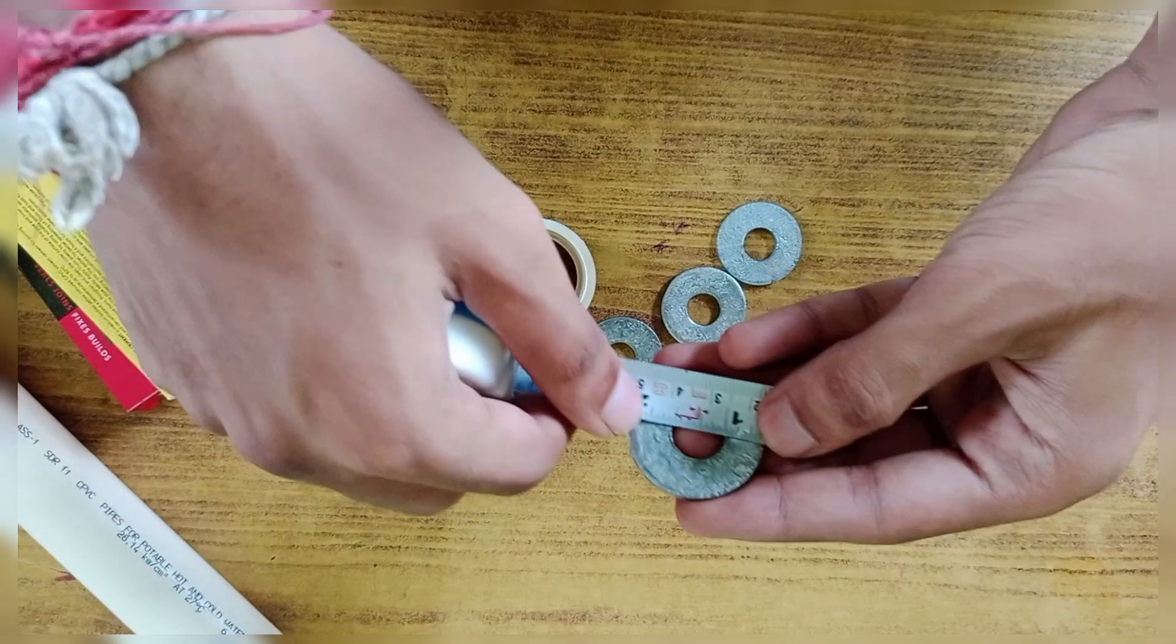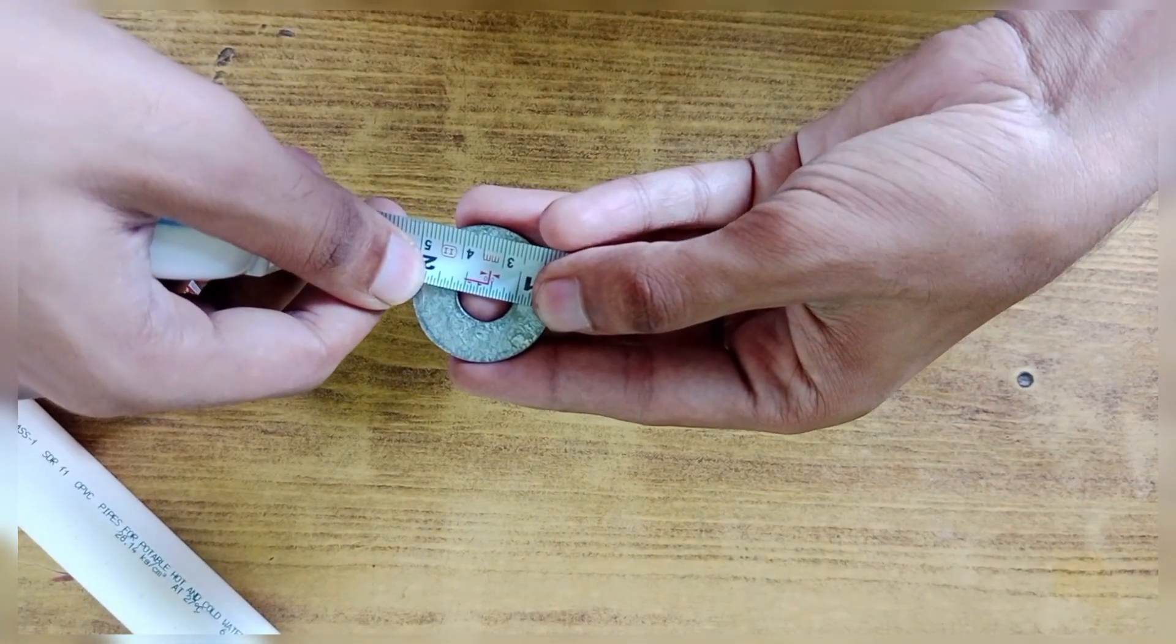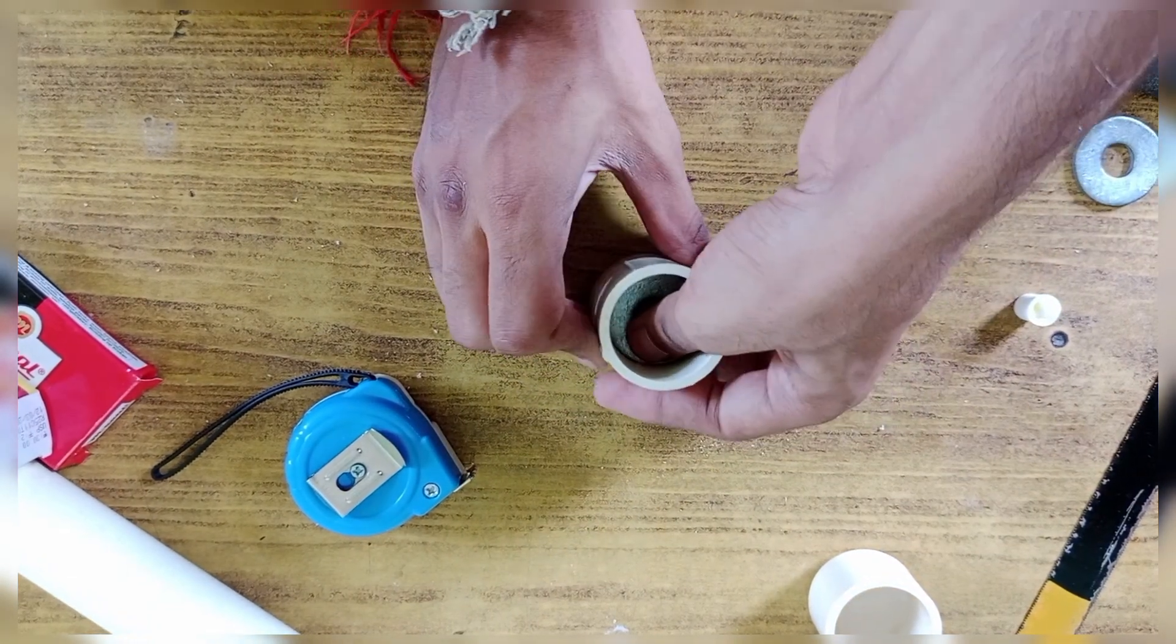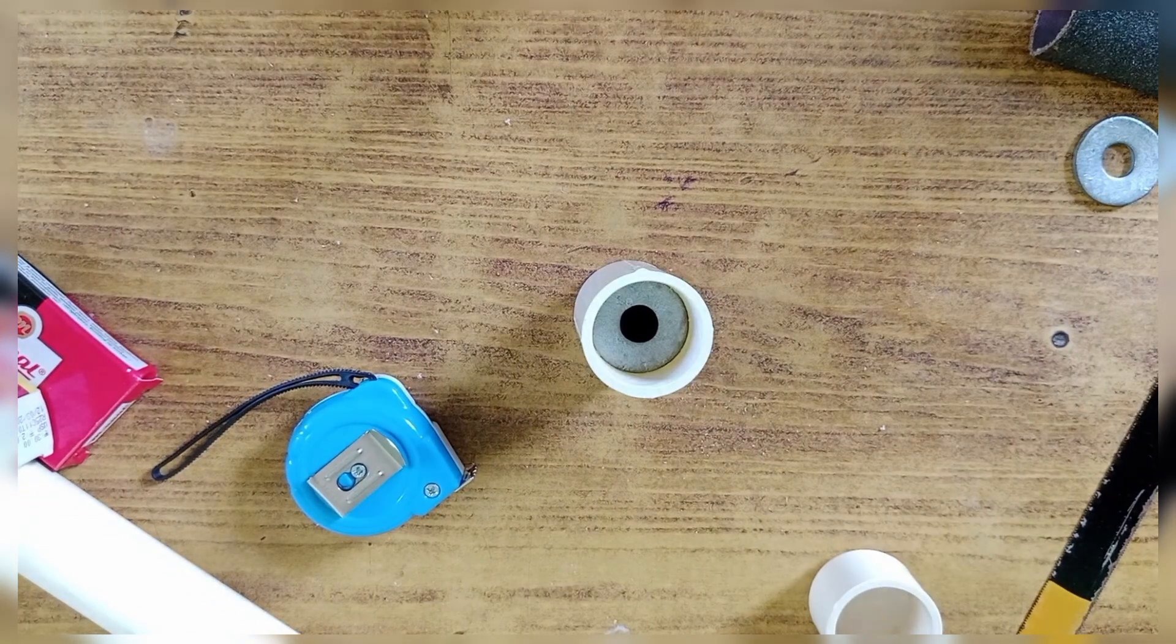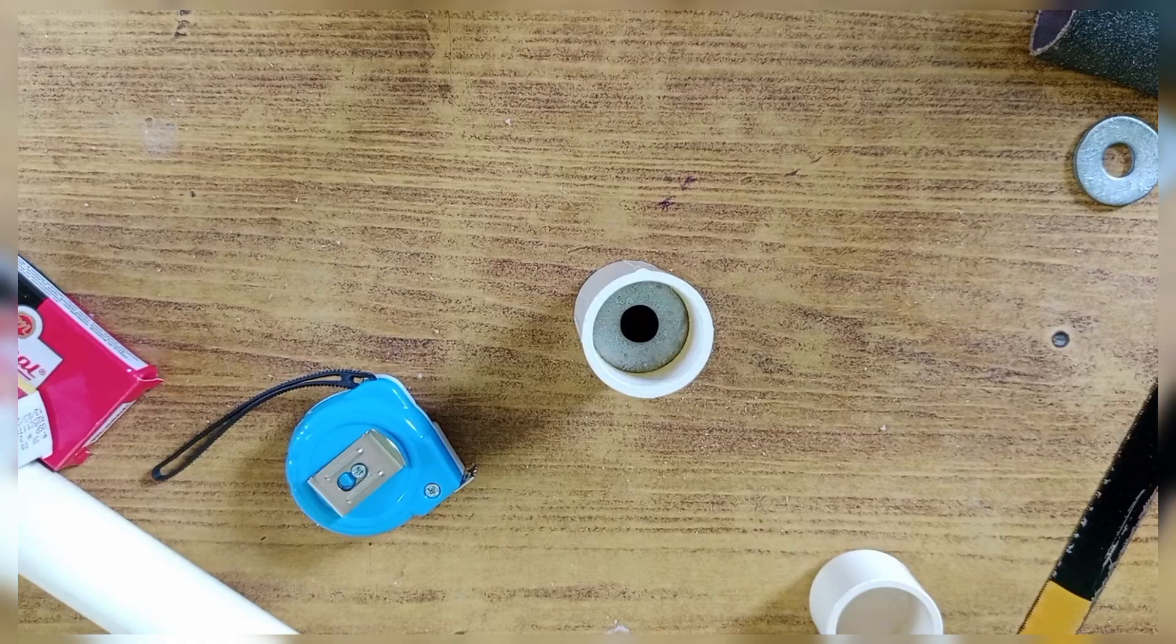The washer's inner diameter is around 0.5 inches, which is quite large for a small rocket motor. However, I thought it would be safer to have a larger throat diameter, as it reduces the chances of overpressure inside the motor. The downside is lower thrust, but I plan to compensate for that by using a more powerful fuel.